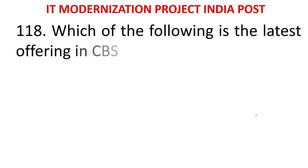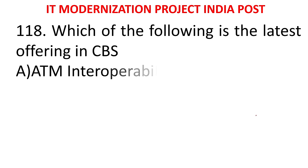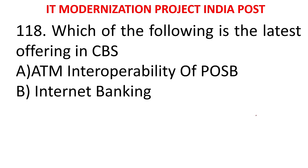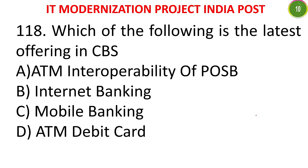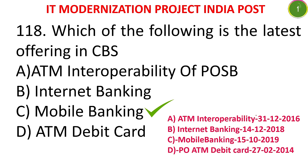MCQ 113: Which of the following is the latest offering in CBS? A) ATM interoperability of POSB, B) Internet banking, C) Mobile banking, D) ATM debit card. The answer is mobile banking, launched on 15-10-2019. Key dates: ATM interoperability 30-12-2016, internet banking 14-12-2018, mobile banking 15-10-2019, PO ATM debit card in 2014.